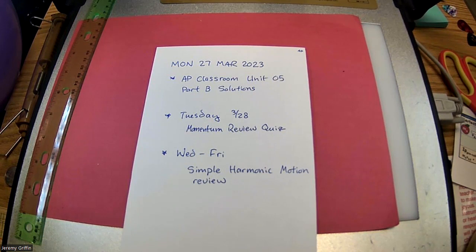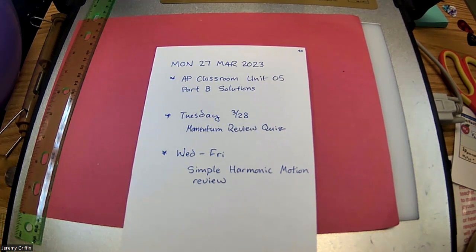Let me do a quick top scientist list before I switch over. For AP Classroom, here's the top tier scorers: we got Taj, Scarlett, Jonathan, Victoria, Leonardo, Nicholas, Rick, and one student who got every single question right — and that was Juno.